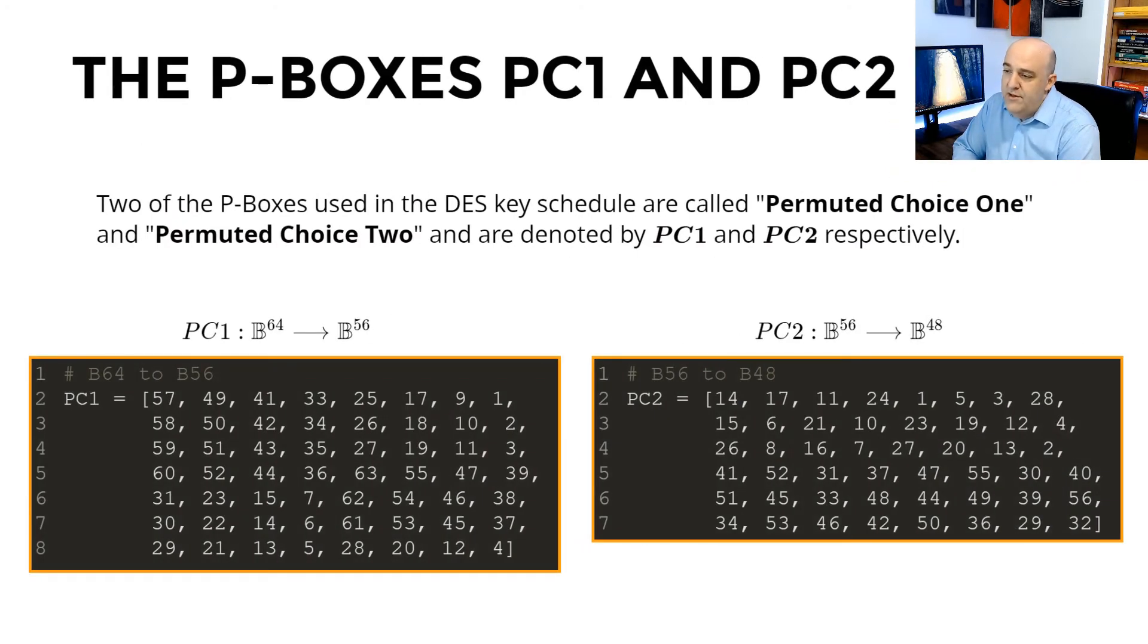The two important P-boxes that are used in the Key Schedule algorithm are called PC1 and PC2. That stands for Permuted Choice 1 and Permuted Choice 2. And here are the lists that define them. These are really arrangements of the bits according to these lists.